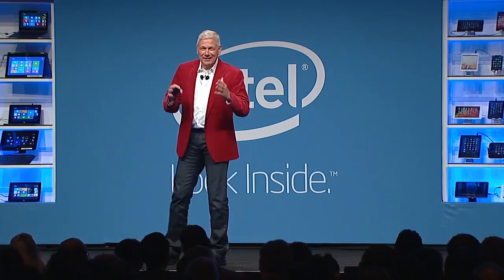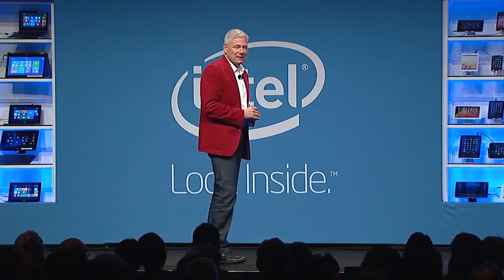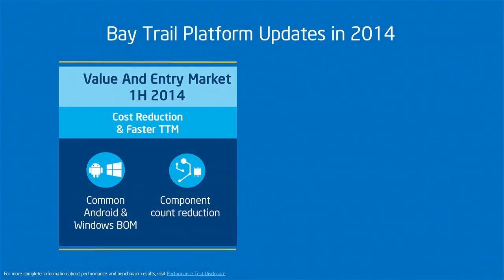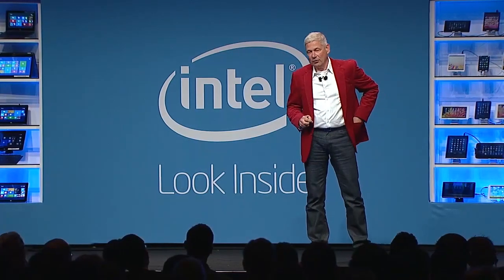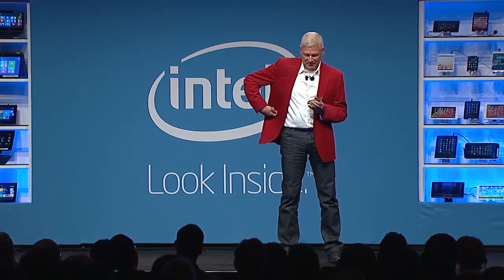Let me change gears and come back to Bay Trail. We have introduced a cost-down version for the value and entry market. That is available now, and it is common for Windows as well as for Android. We have reduced the component count, and let me show you what that means.